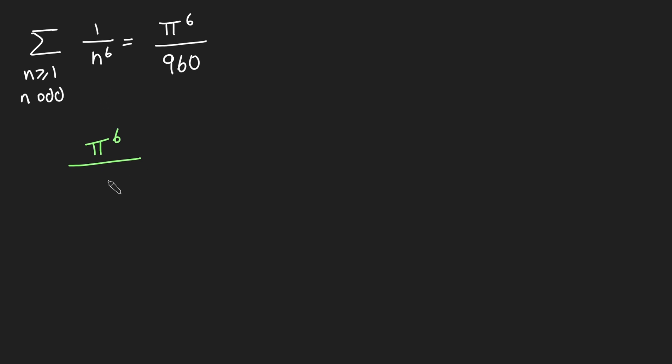And so I can say that pi to the 6 over 960 is bigger than 1 over 1 to the 6 plus 1 over 3 to the 6 like so. So pi to the 6 over 960 is bigger than this. So I've just taken the first two terms of this. Obviously there are some other terms here hence why I've put bigger than. Now what is this equal to? Well this is just 1 plus 1 over 729 like so.